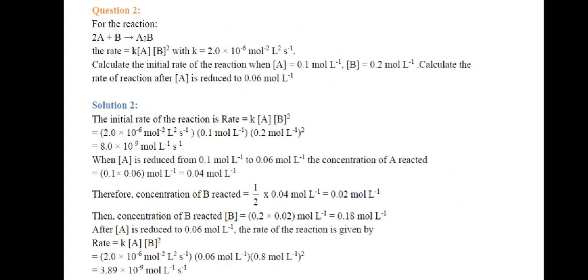After [A] is reduced to 0.06 mol·L⁻¹, the new rate of reaction is K[A][B]² = 2.0 × 10⁻⁶ × 0.06 × (0.18)² = 3.89 × 10⁻⁹ mol·L⁻¹·s⁻¹.